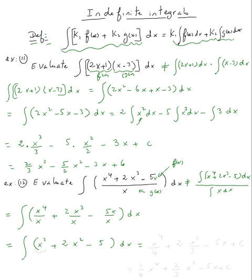We'll do this all in one step using the power rule. x cubed integrates to x to the four over four, plus 2 times x squared integrates to x cubed over three, minus the integral of constant 5 is 5x, and don't forget plus C. Rewriting: one-fourth x to the fourth plus two-thirds x cubed minus 5x plus C, and we're done.